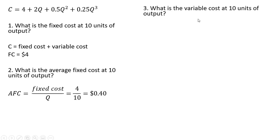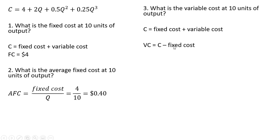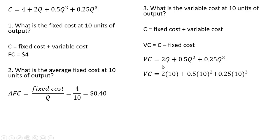Question 3: what is the firm's variable cost at 10 units of output? Total cost is fixed cost plus variable cost, so variable cost equals total cost minus fixed cost — everything in the total cost equation except the constant. Evaluating variable cost at 10 units of output and simplifying, we get variable cost of $320.